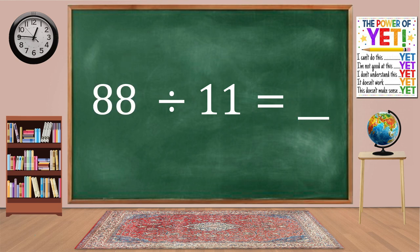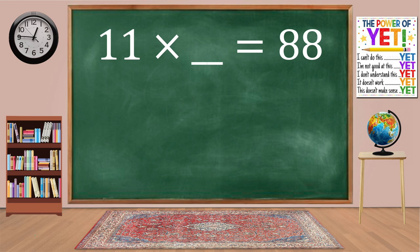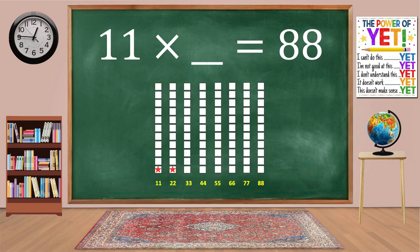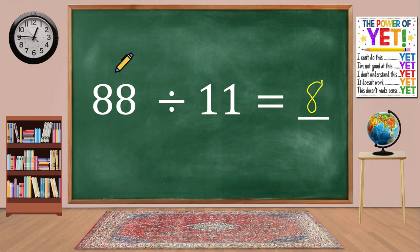88 divided by 11 equals blank. Our related fact is 11 times what equals 88? Skip count: 11, 22, 33, 44, 55, 66, 77, 88. We have eight columns. 11 times 8 equals 88. 88 divided by 11 equals 8.